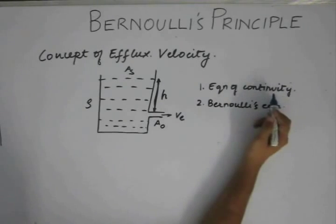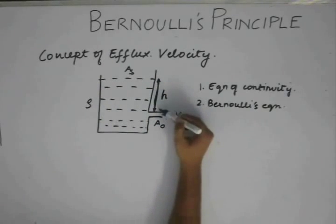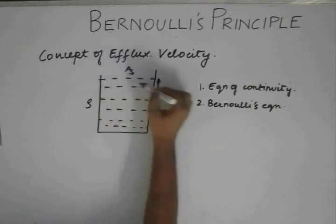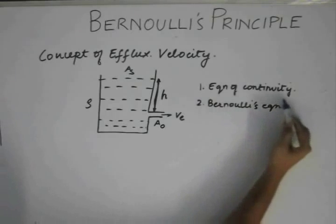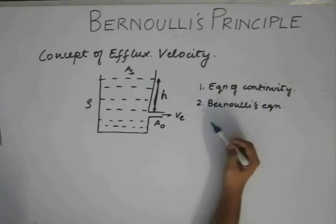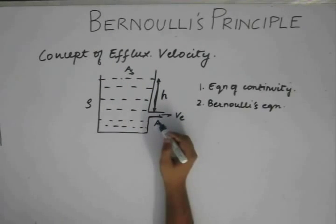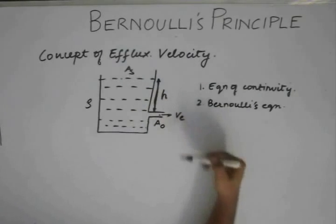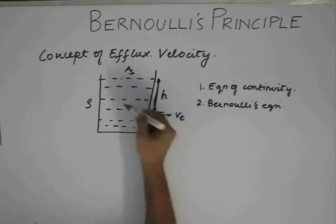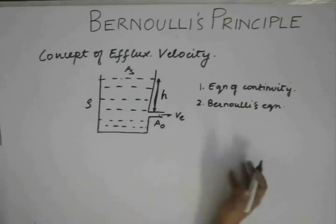To apply the equation of continuity, we basically require that the area plane should be perpendicular to the velocity vector. To apply Bernoulli's equation, the two points across which we apply must be in the same fluid and must be along the same streamline. Assuming these two points lie along the same streamline, we can always apply Bernoulli's equation provided all the other assumptions are holding.